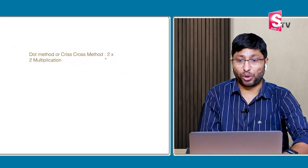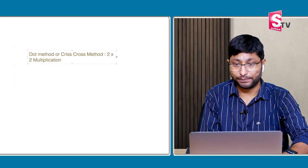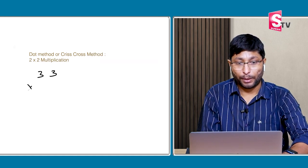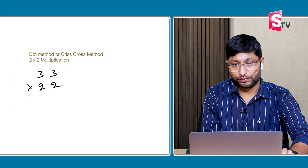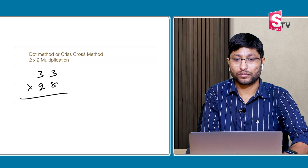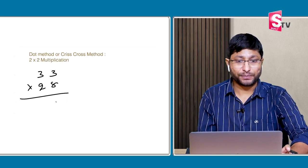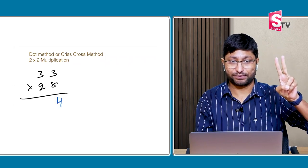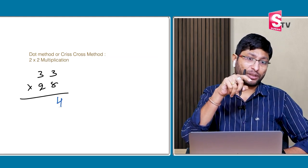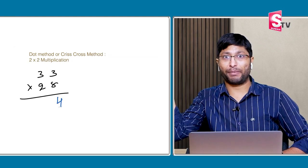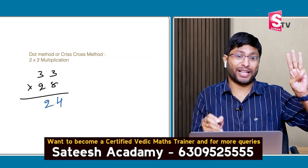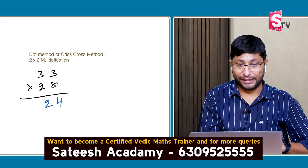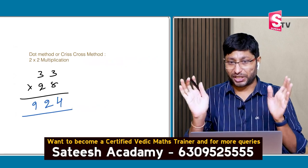This is the last problem. 33 multiplied by 28. Everything in the mind: 3 eights are 24, write down the 4, 2 in the mind. 8 threes are 24, plus 6 is 30, plus 2 in the mind is 32. Write down the 2, 3 in the mind. 3 twos are 6, plus 3 in the mind is 9. The answer is 924.